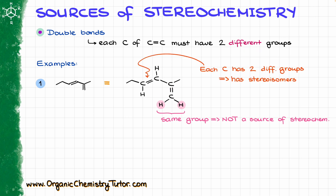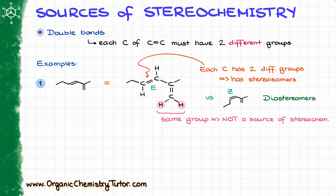However, the top double bond has two different groups on each carbon. The carbon on the left has an ethyl group and a hydrogen, while the carbon on the right has a hydrogen and the rest of the molecule. So each carbon has two different groups, making it a source of stereochemistry. This particular stereoisomer is the E stereoisomer, and we can have an alternative — the Z stereoisomer — where the hydrogens are on the same side. Any E versus Z relationship is going to be diastereomers, because the two molecules are not superimposable and are not mirror images.